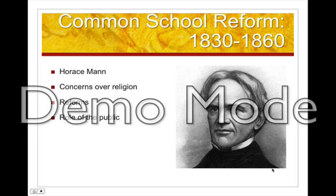Mann pushed specific reforms at a policy level: a longer school year than the typical four or five months, formally trained teachers with a professional identity, systematic examinations for both teachers and students, and a significant public role in supporting public schools. The most difficult reform was public funding through taxation, which was unpopular and very slow. He argued that educated workers were more reliable and more productive, so it was in the public's best interest to raise tax money to make this happen. Mann was also a firm believer in Republican motherhood and women's education, feeling women were best suited to teach, and argued for their professionalization. By 1900 the vast majority of educators were women.